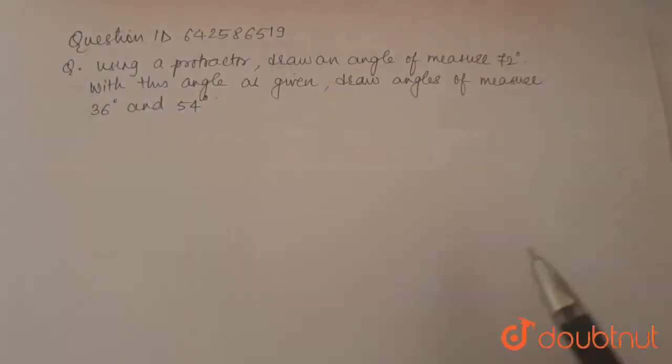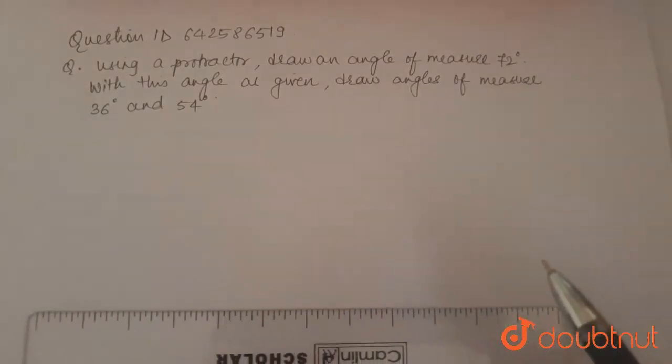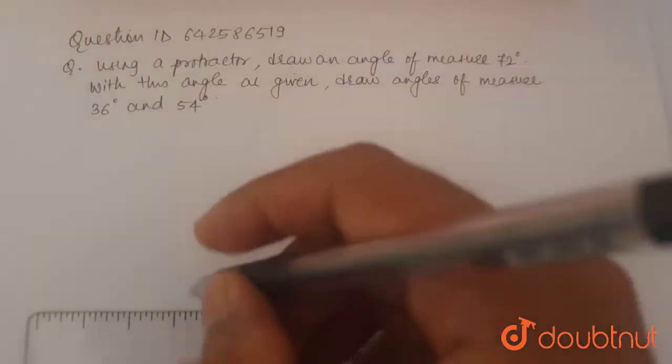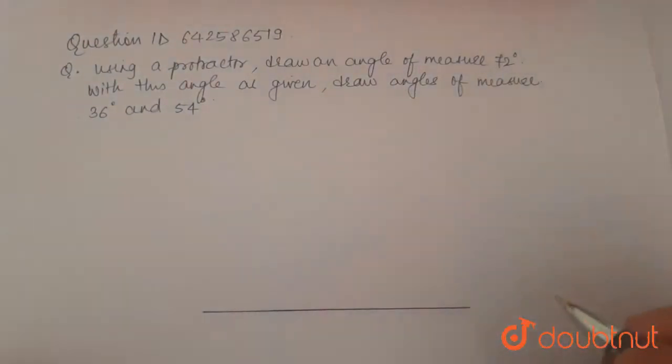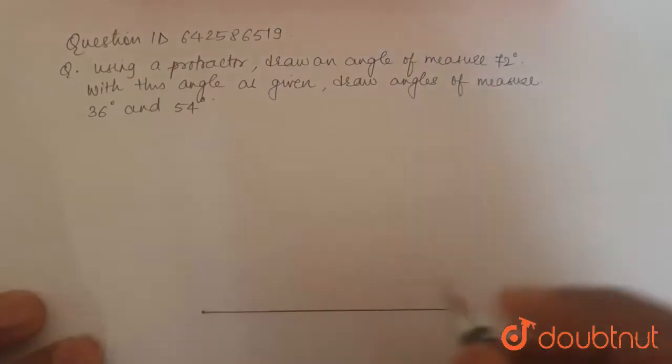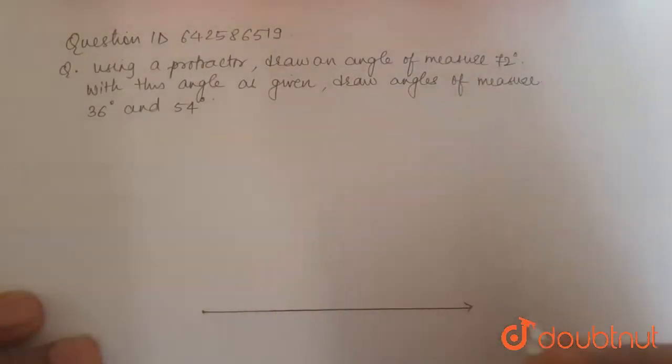We start by making an angle of 72 degrees first. This is the base of the angle, mark it O, A.